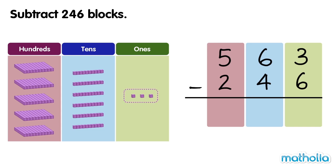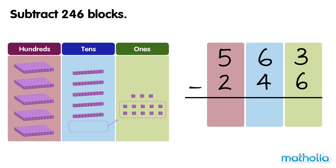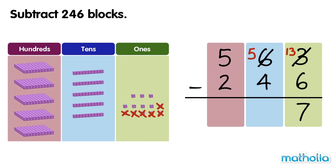Let's start by subtracting the ones. We cannot subtract 6 ones from 3 ones, so we regroup 1 ten into 10 ones. Now we have 5 tens and 13 ones. Let's subtract the ones: 13 ones minus 6 ones equals 7 ones.